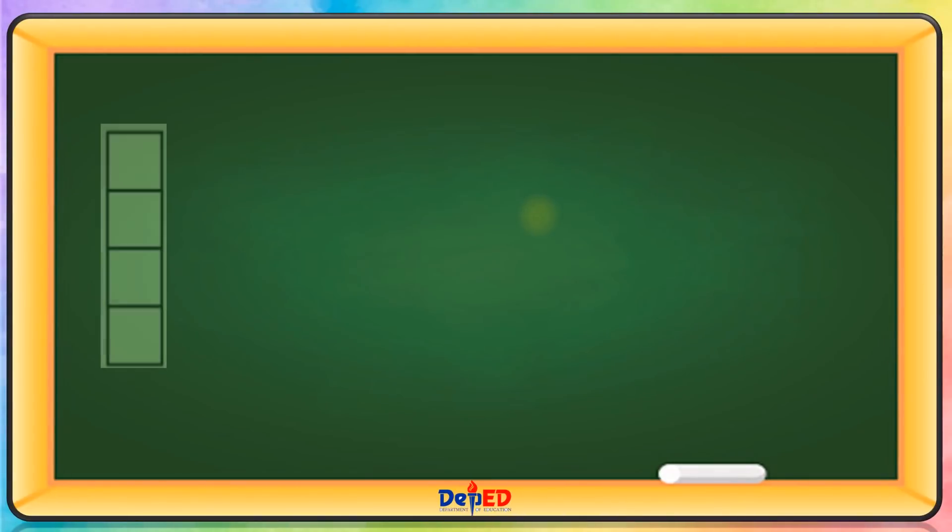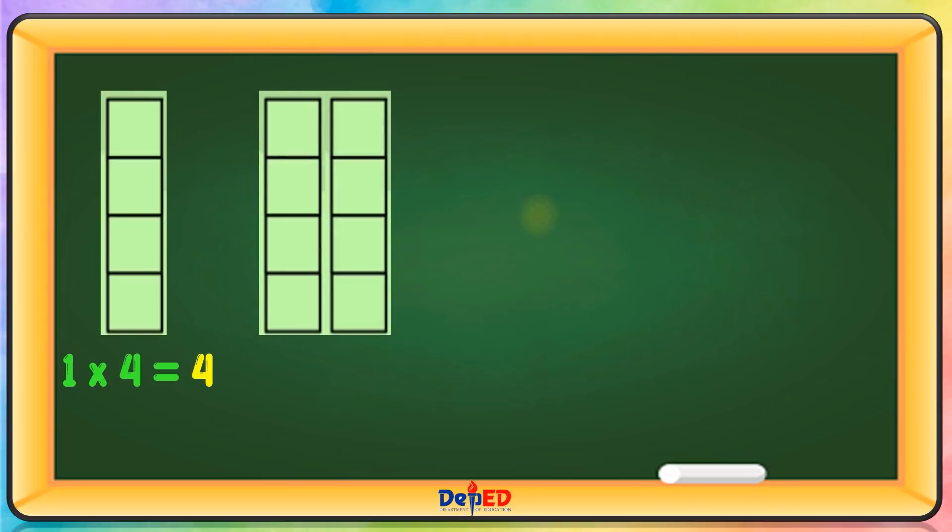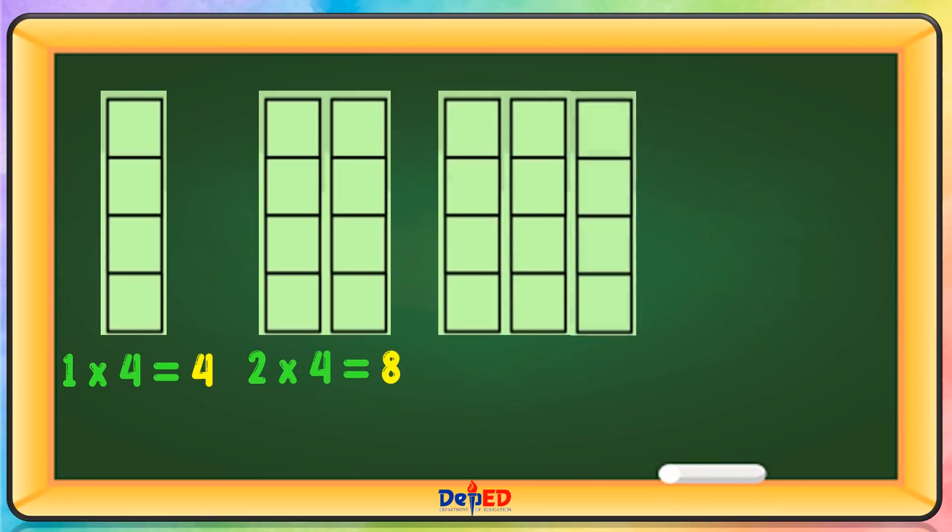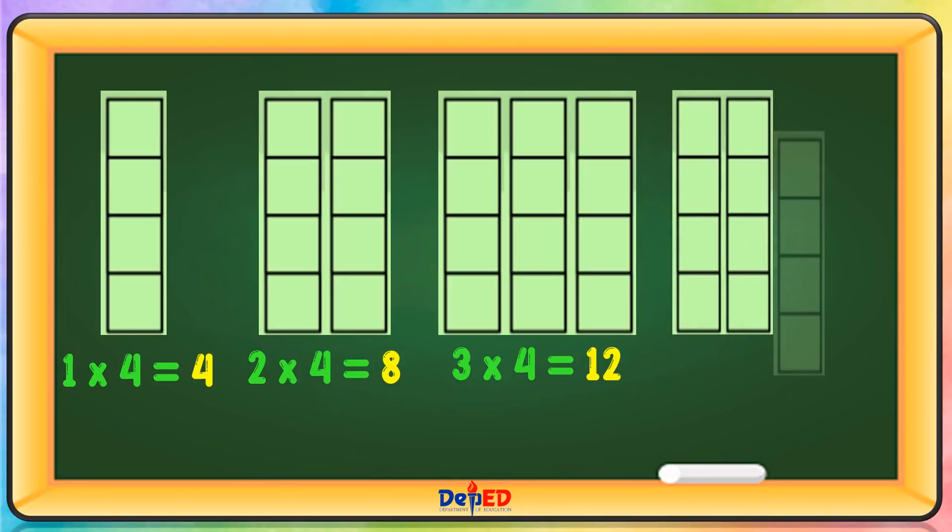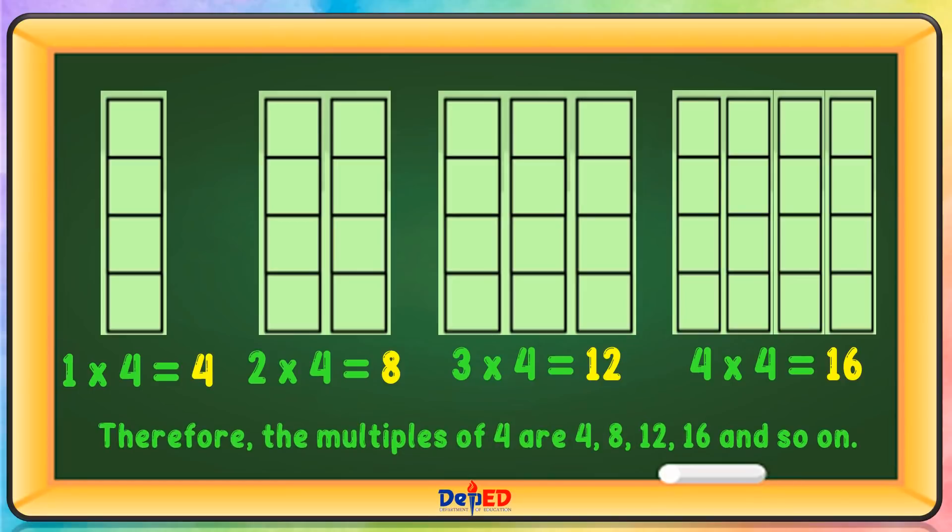1 times 4 equals 4. 2 times 4 equals 8. 3 times 4 equals 12. Therefore, the multiples of 4 are 4, 8, 12, 16, and so on.